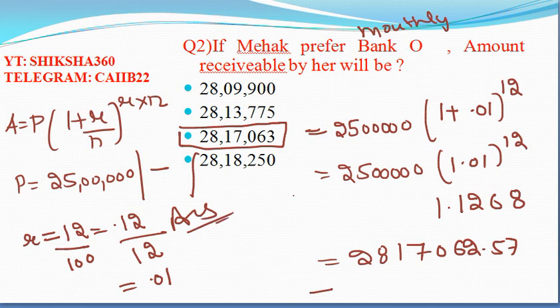These questions are straightforward but require knowing the formulas. You have to know the formulas and understand the concept. The key formula is A = P(1 + r)^n, where r is the effective rate per period and n is the number of compounding periods. I think this question is clear to all of you.